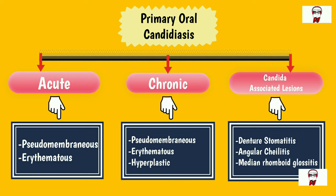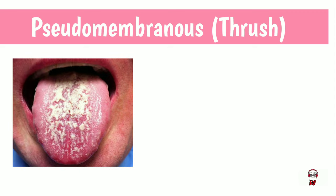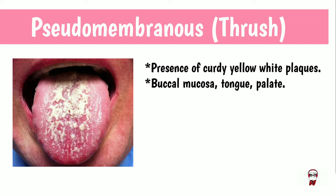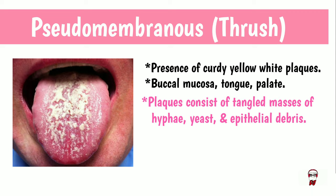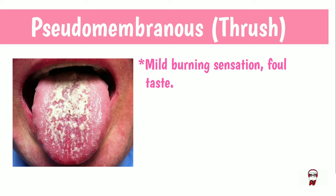You can also see Candida-associated lesions such as denture stomatitis, angular cheilitis, and median rhomboid glossitis. The most classical form of infection is pseudomembranous candidiasis, or thrush. In thrush, there will be presence of curdy, yellow-white plaques in the oral mucosa — usually the buccal mucosa, tongue, and palate. These plaques consist of tangled masses of hyphae, yeast, and epithelial debris. They are also removable. The underlying mucosa may be normal or erythematous. Other symptoms include mild burning sensation and foul taste.